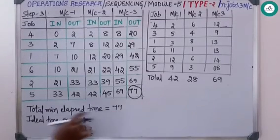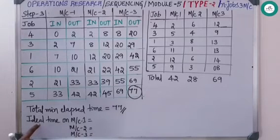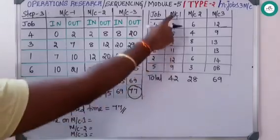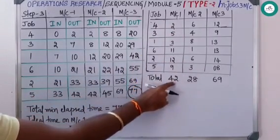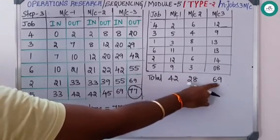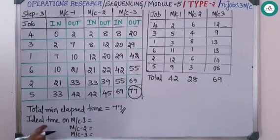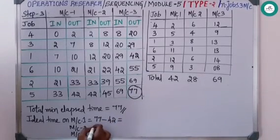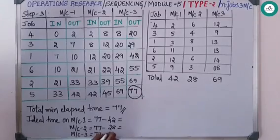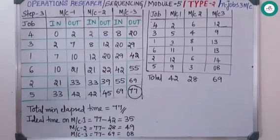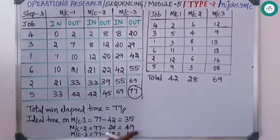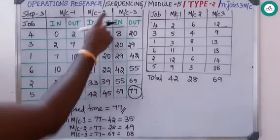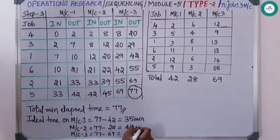The total minimum elapsed time is 77. To calculate idle time on each machine: sum all processing durations — machine one total is 42, machine two is 28, machine three is 69. Idle time = 77 minus each total: machine one idle = 77−42 = 35 minutes, machine two idle = 77−28 = 49 minutes, machine three idle = 77−69 = 8 minutes. This completes the problem.